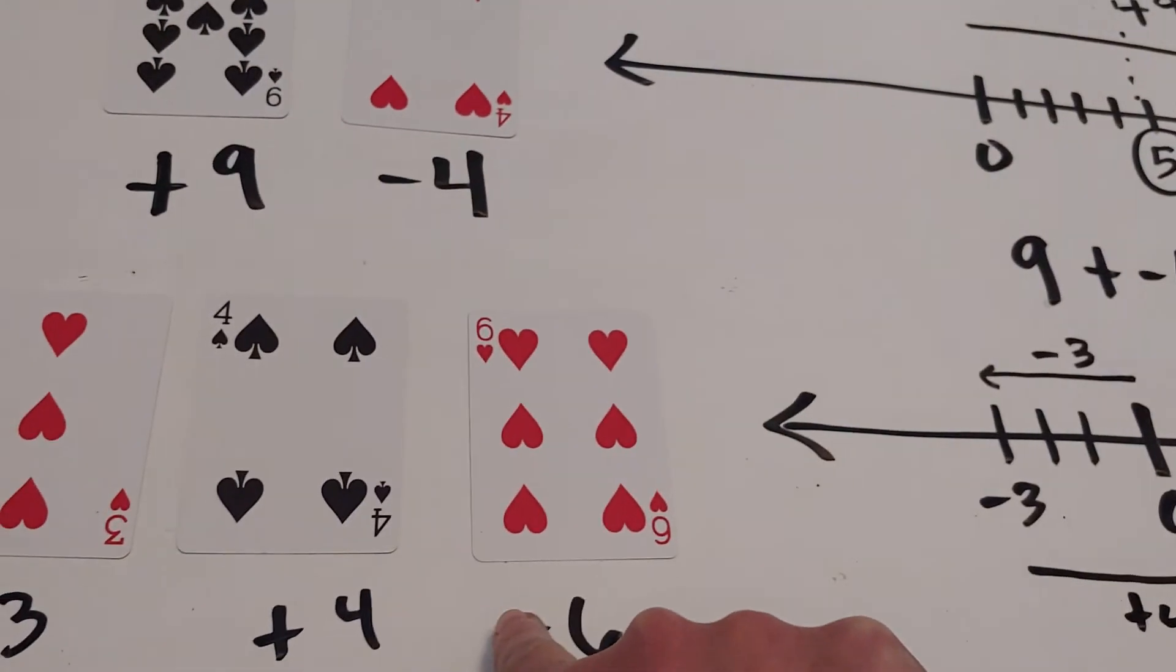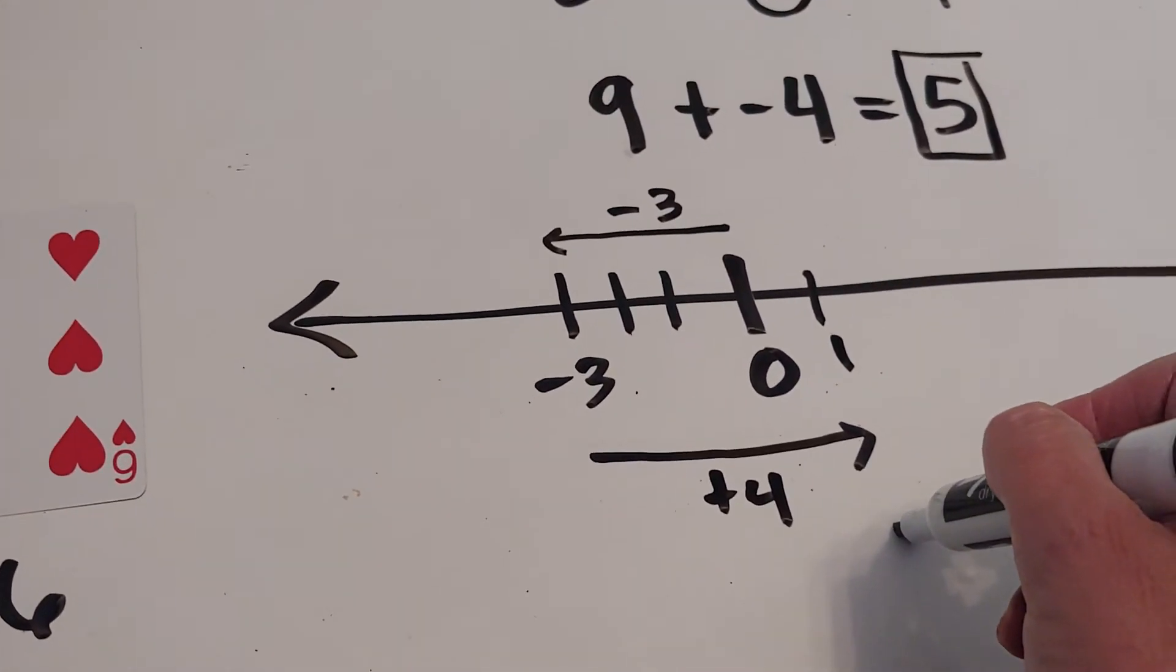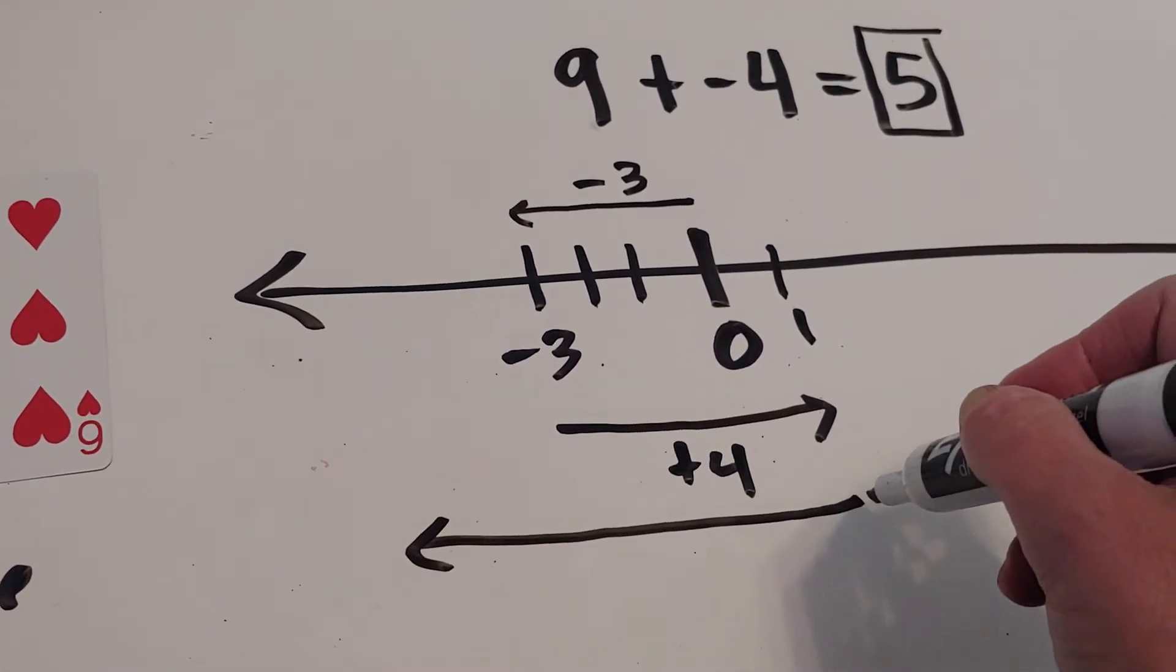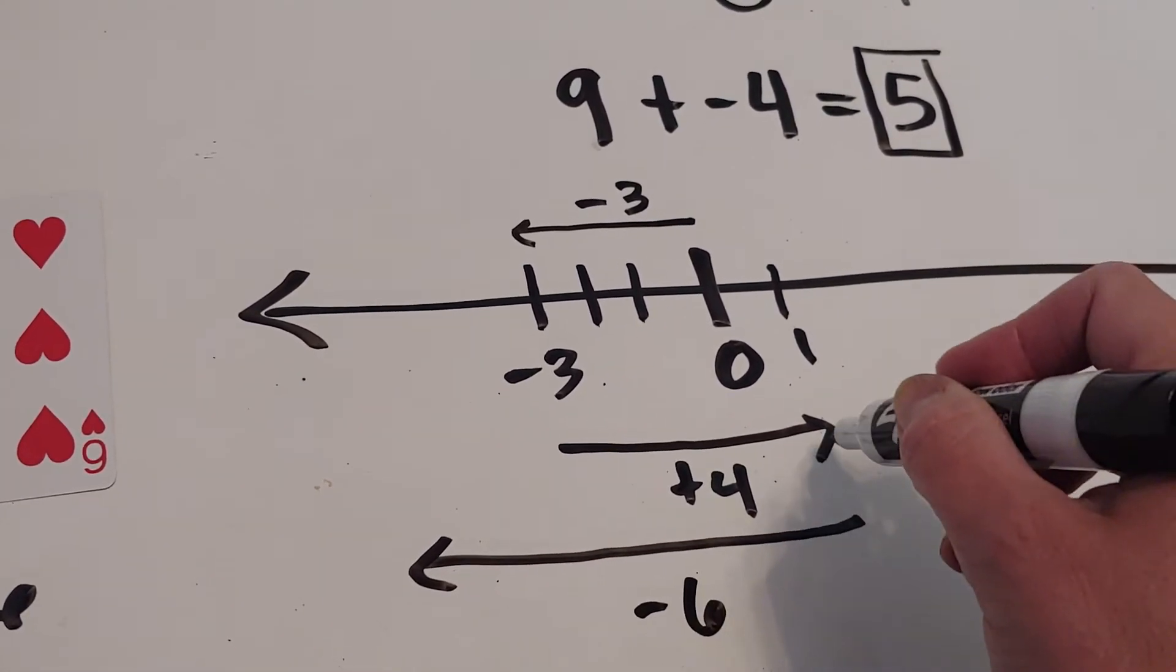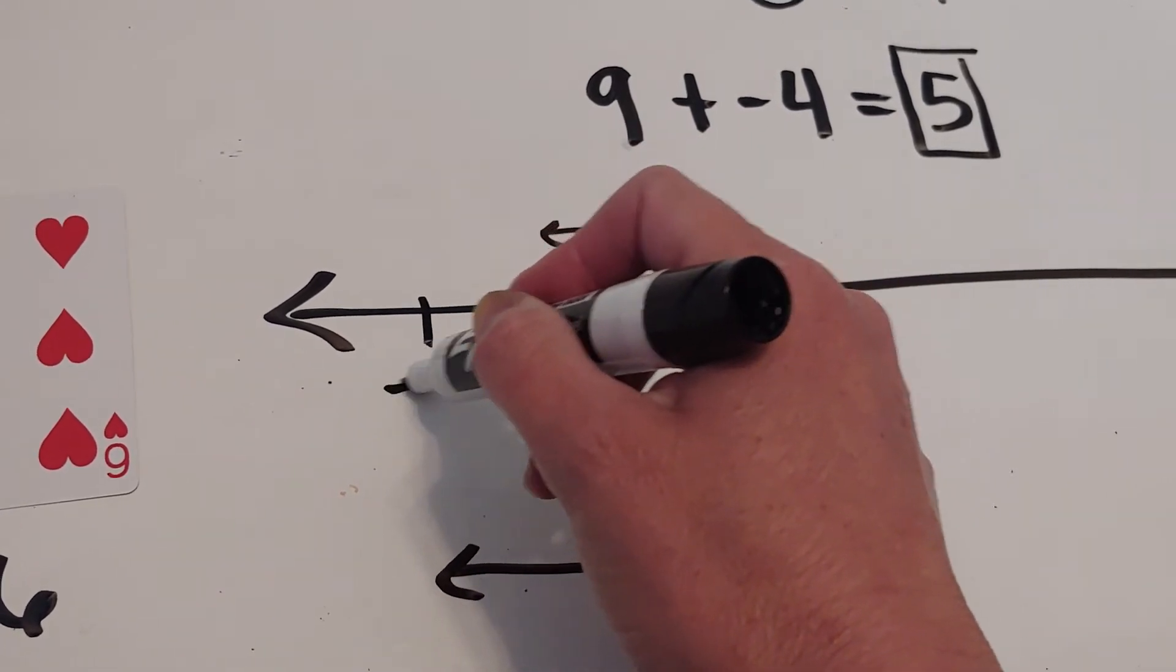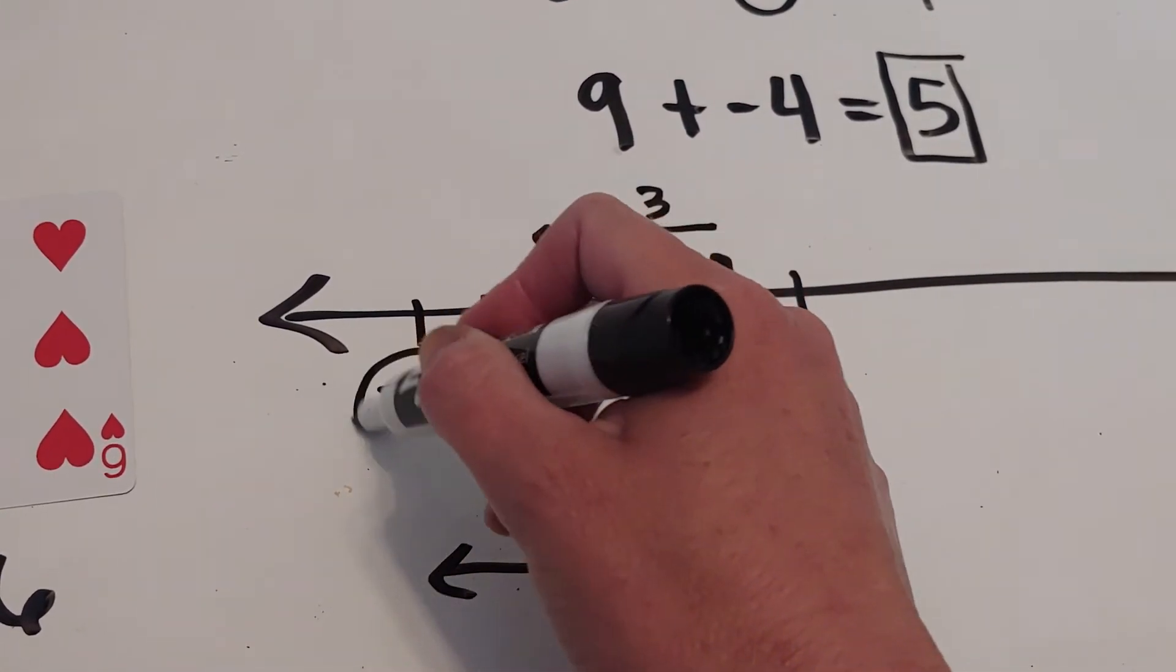From there, my last card says go backwards six. If I start here and go back six, it lands at negative five. So my arrows are: back three, then positive four, then backward six.